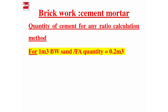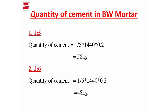The quantity of fine aggregate, that is sand, for 1 m³ of brickwork is 0.2 m³. This is the fine aggregate quantity for 1 m³ of brickwork. The 3rd value is 0.2 m³. The question is about the quantity of cement in brickwork mortar for 1 m³ of brickwork.